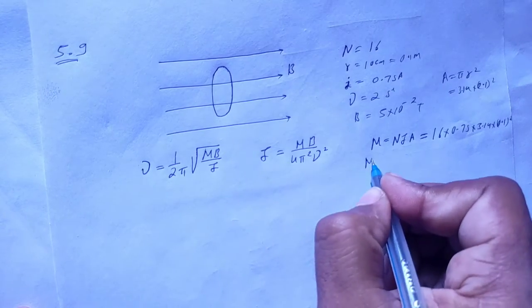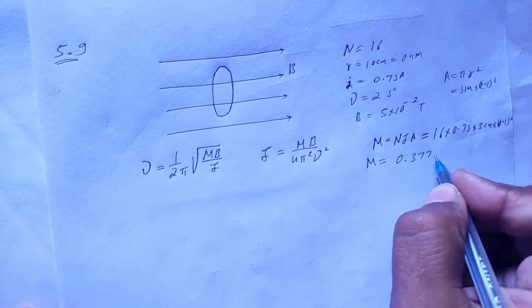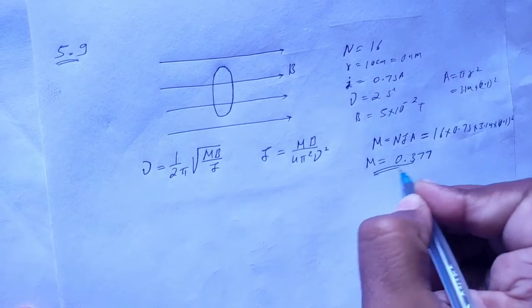So we will solve it. Then we will have magnetic moment. How much is it? 0.377. This is the magnetic moment.